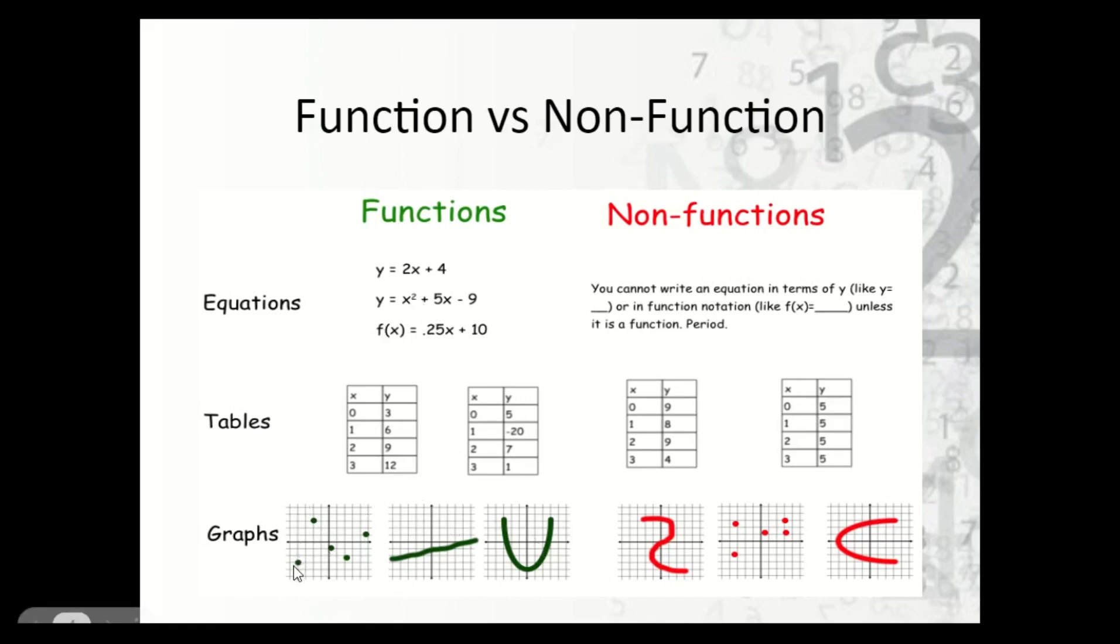But if we notice here, there's an x value here at x equals negative 4, and y is negative 3. There's no other y value that matches with it. Same thing with all of these. Here we have a straight line, I can pick any x value, and there's only one y that matches it.